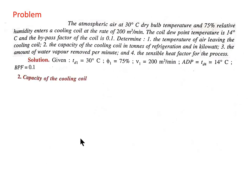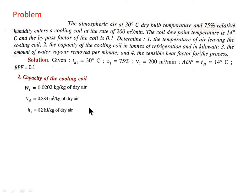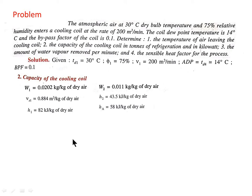The second thing to calculate is the capacity of the cooling coil in tons of refrigeration and in kilowatt. From point 1 on the psychrometric chart we note down specific humidity, specific volume, and enthalpy. From point 2 we note specific humidity and enthalpy, and from point A we note enthalpy. The mass of air flowing into the coil is MA = V1 / Vs1 = 200 / Vs1, giving MA = 226.2 kg/min.